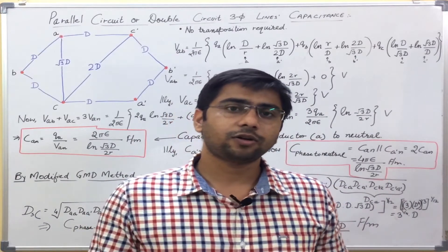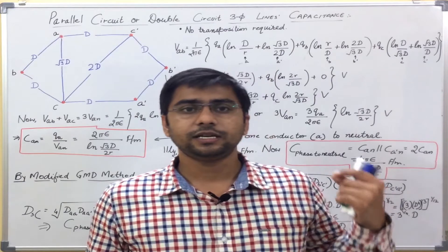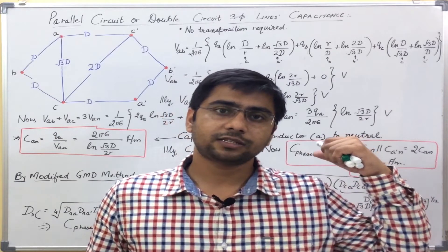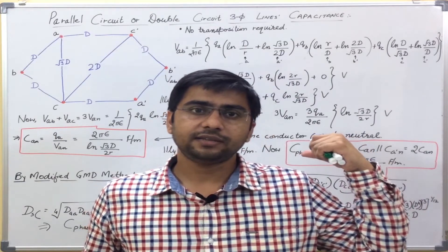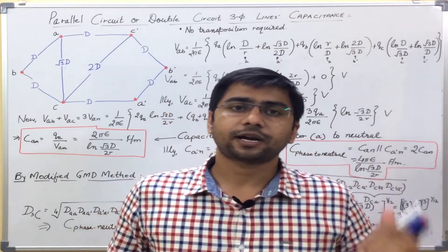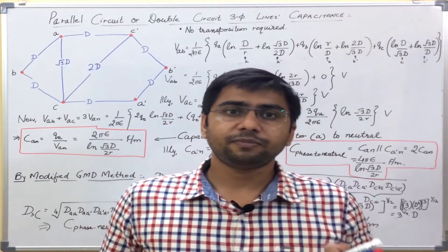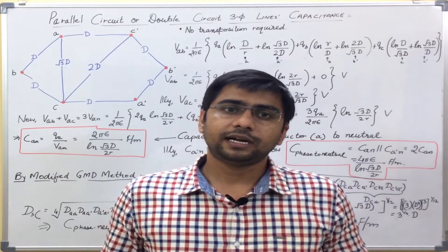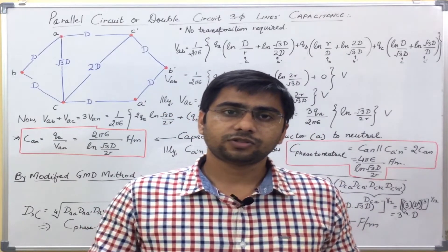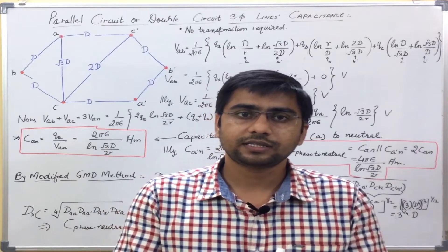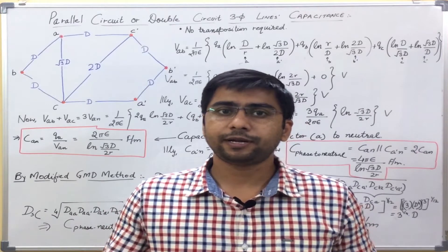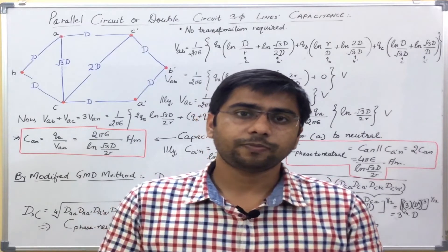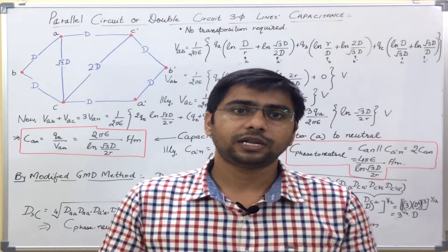There are a lot of benefits as we have already seen while deriving the inductance — we saw that we could increase the GMR, geometric mean radius of the conductor. Because of that, the inductance was reduced. This further helped in the reduction in the voltage drop along the length of the line.